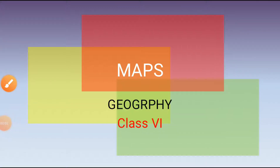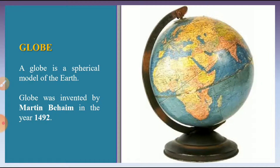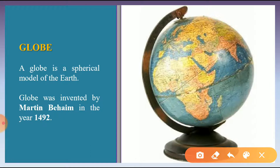Hello everyone, today we'll start a new chapter that is map. A globe is a spherical model of Earth. Globe serves a purpose similar to some maps — it shows the distribution of land and water on the surface of the Earth in a small form. The globe was first invented by Martin Behaim in the year 1492.